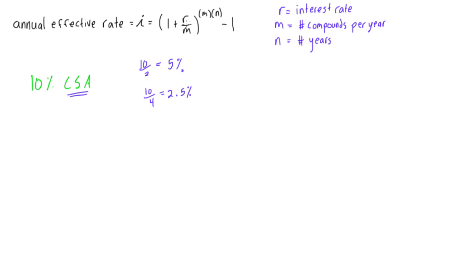So annual effective rate, what we have here is 1 plus R over M, where R is the interest rate that you're given, so that would be just 10% here. M is the number of compounds per year. If it's semi-annually, this number is going to be 2. That's what we did right here, 10 over 2.